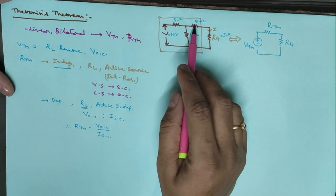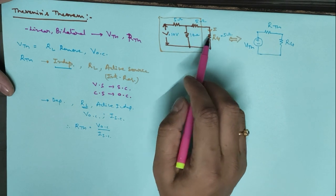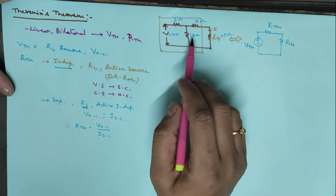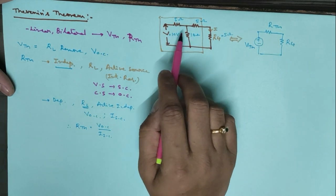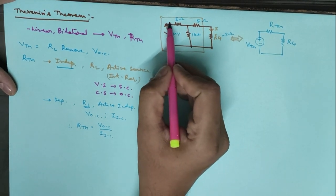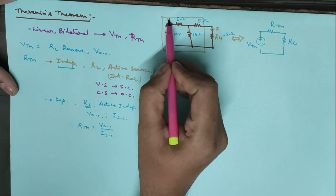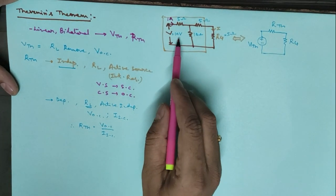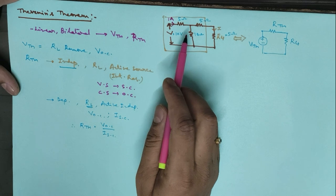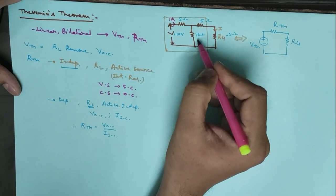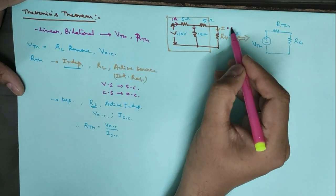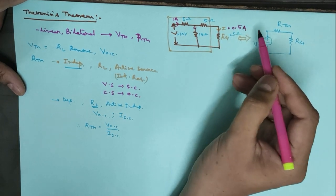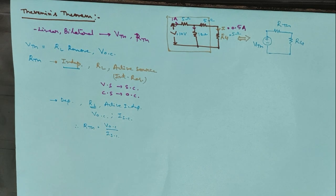5 ohm and 5 ohm are in series, so the resultant equivalent will be 10 ohm. This 10 ohm and that 10 ohm are in parallel, so the equivalent is 5 ohm. And this 5, this 5, and this 5 will be in series, so the equivalent is 10 ohm. Finally, the current passing at this point would be 1 ampere as the voltage is 10 volt and the resistance is 10 ohm. The current passing here is 0.5 ampere. So we know what is the current passing through resistor R4.